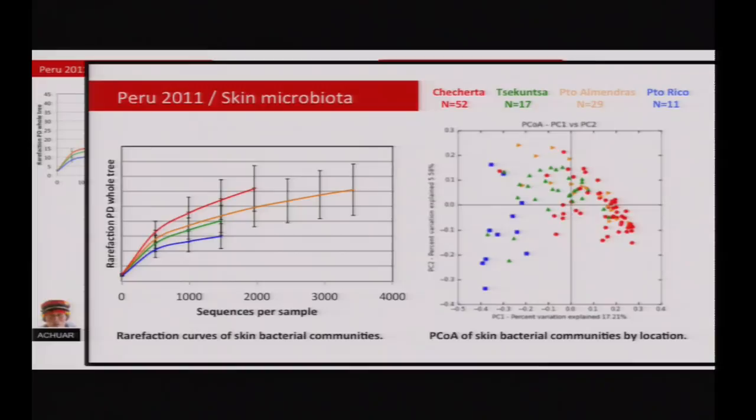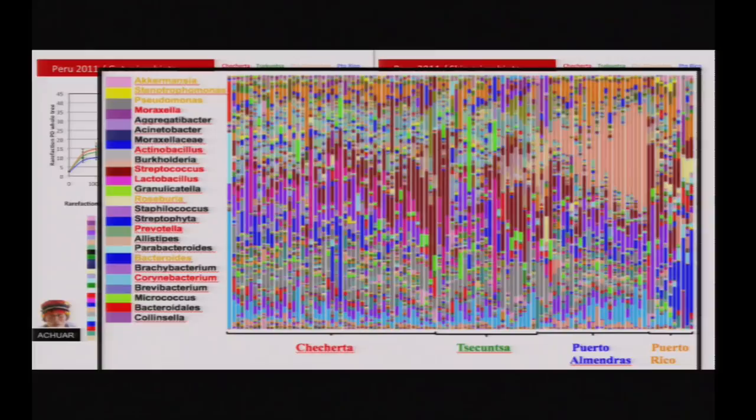We observed remarkable differences in the gut. We also studied the skin with the same tendency — Checherta had highest diversity, Puerto Rico the lowest. They cluster apart, and the taxa explaining differences are notable: Prevotella, just as in the feces, is higher on the skin of jungle people than Puerto Ricans, while Puerto Ricans have more Bacteroides. Other species vary, marked in red for Checherta and yellow for Puerto Rico.